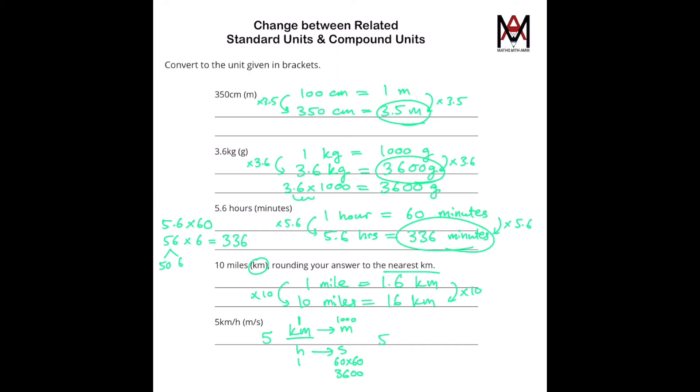We need to multiply 5 by 1,000 over 3,600. We cancel out these two zeros, and then that's the same as 5 times 10 over 36. We calculate that, and that's 1.38 recurring. So this is just done using the calculator. So 1.38 meters per second. That's what 5 kilometers per hour equals to.